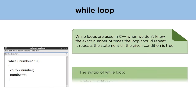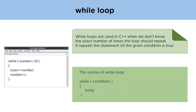Another type of loop is the while loop. While loops are used in C++ when we don't know the exact number of times the loop should repeat. It repeats the statements until the given condition is true. The syntax is: the while keyword and condition in brackets — the loop iterates while that condition is true, and once it becomes false, control passes outside the loop. For example, if the condition is number < 10, the loop keeps iterating until number becomes equal to 9, incrementing the variable after each iteration.